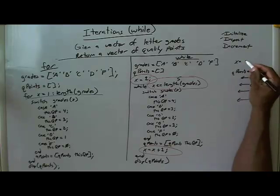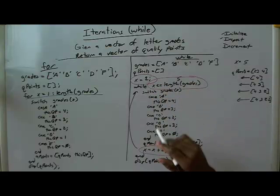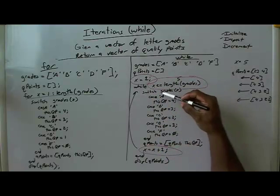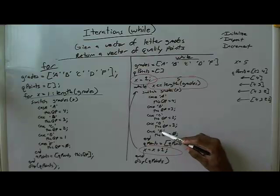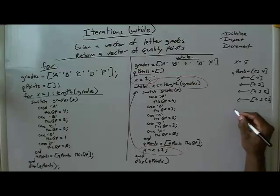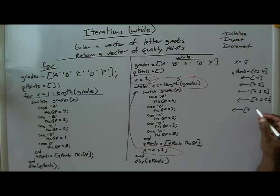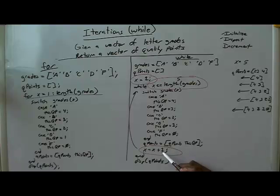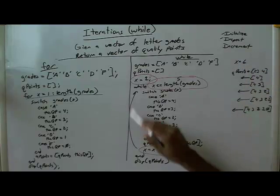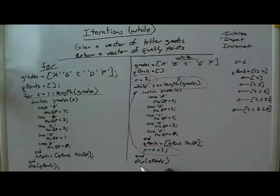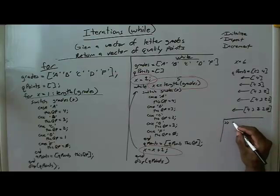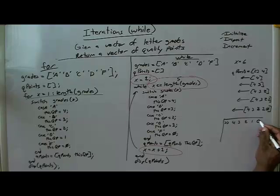X gets incremented, so now X is equal to 5. You come back up to the top of the loop once again. Is 5 less than or equal to 5? Yes it is. Switch grades indexed at 5 — that's F. The switch statement evaluates to 0 because case F, this QP is 0. Now 0 gets concatenated onto the end of QPoints, so QPoints is 4, 3, 2, 1, 0. Now you increment X again — X is now 6. You come up here. 6 is not less than or equal to 5, so you fall out of the while loop and come down to display QPoints. In the command window, 4, 3, 2, 1, 0 gets displayed.